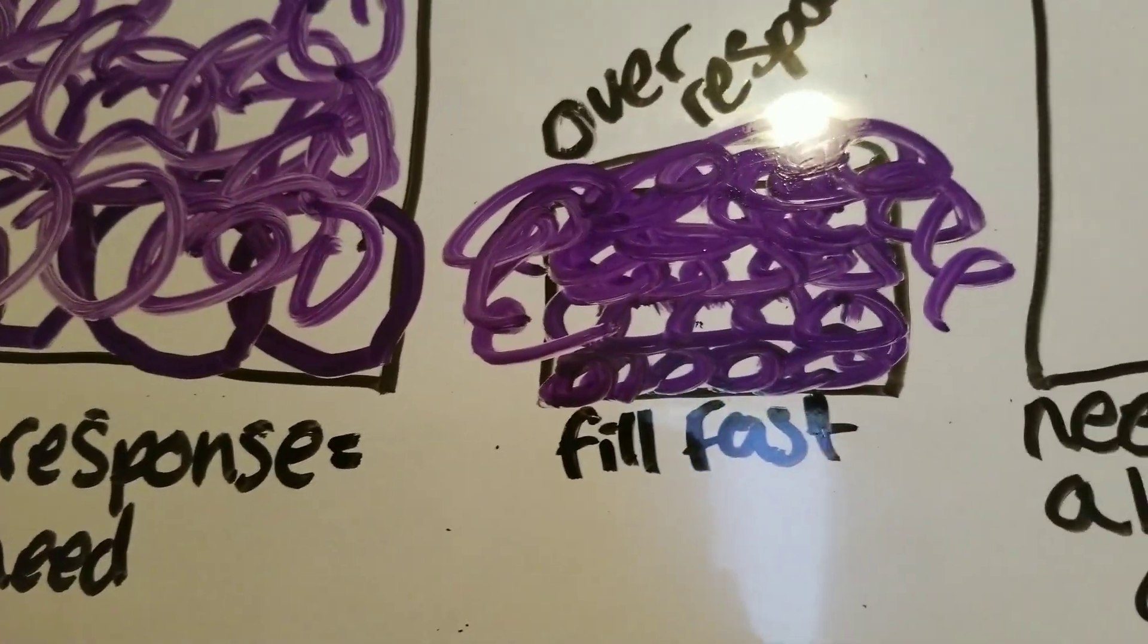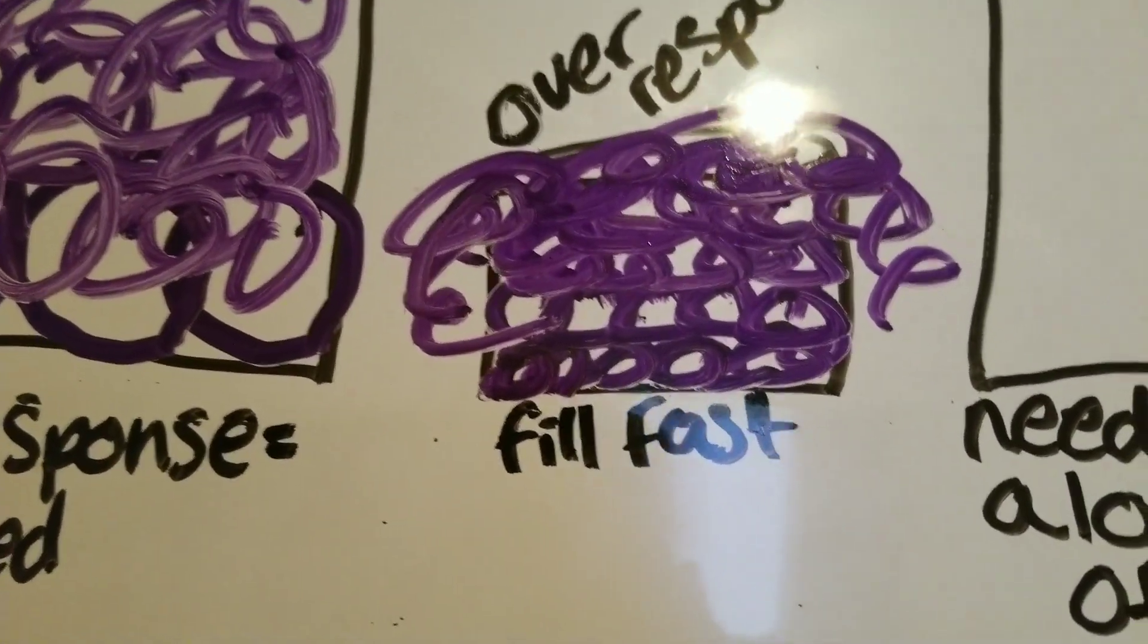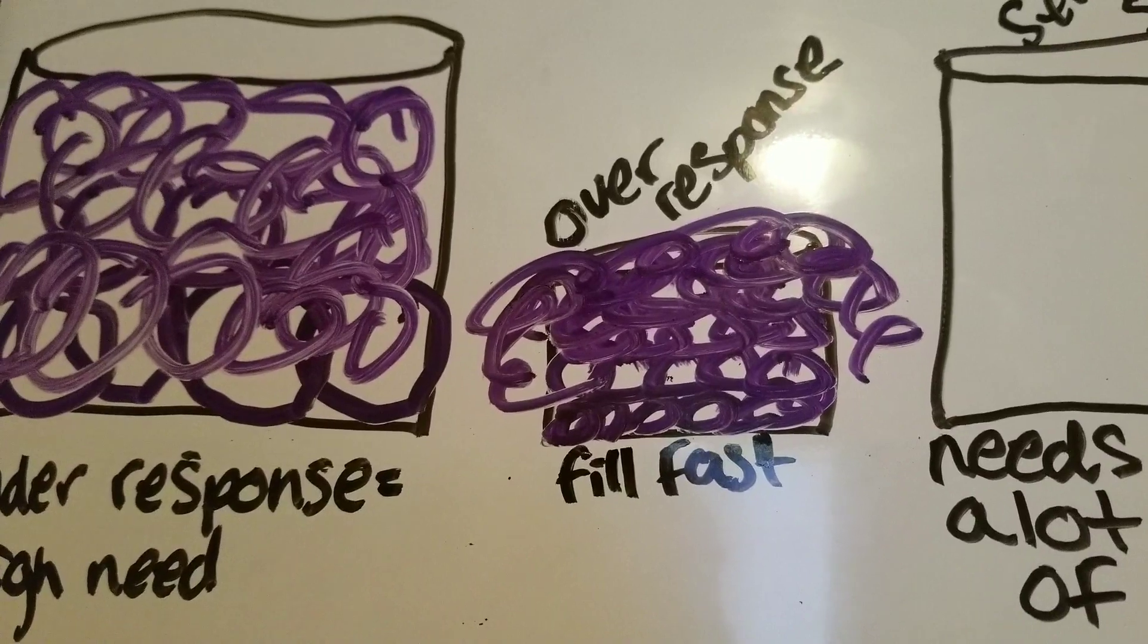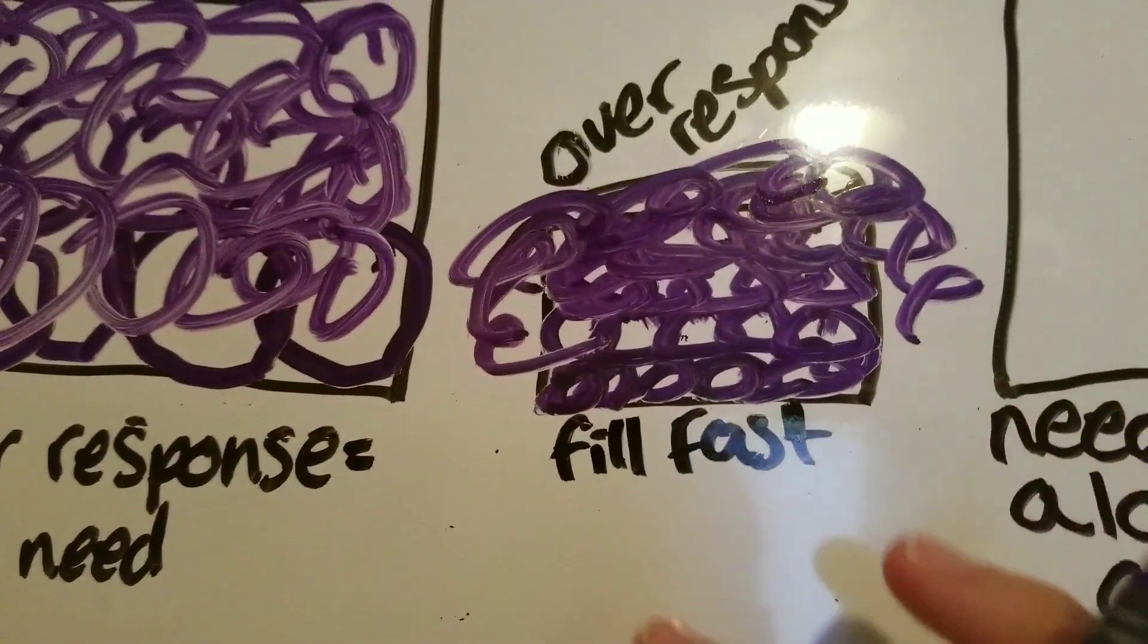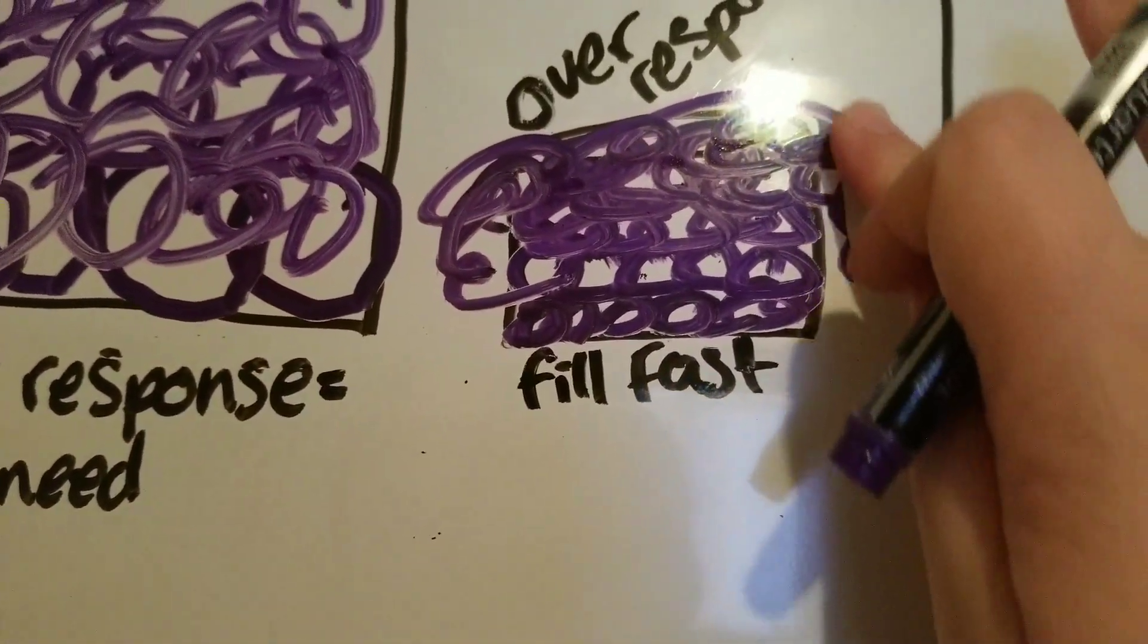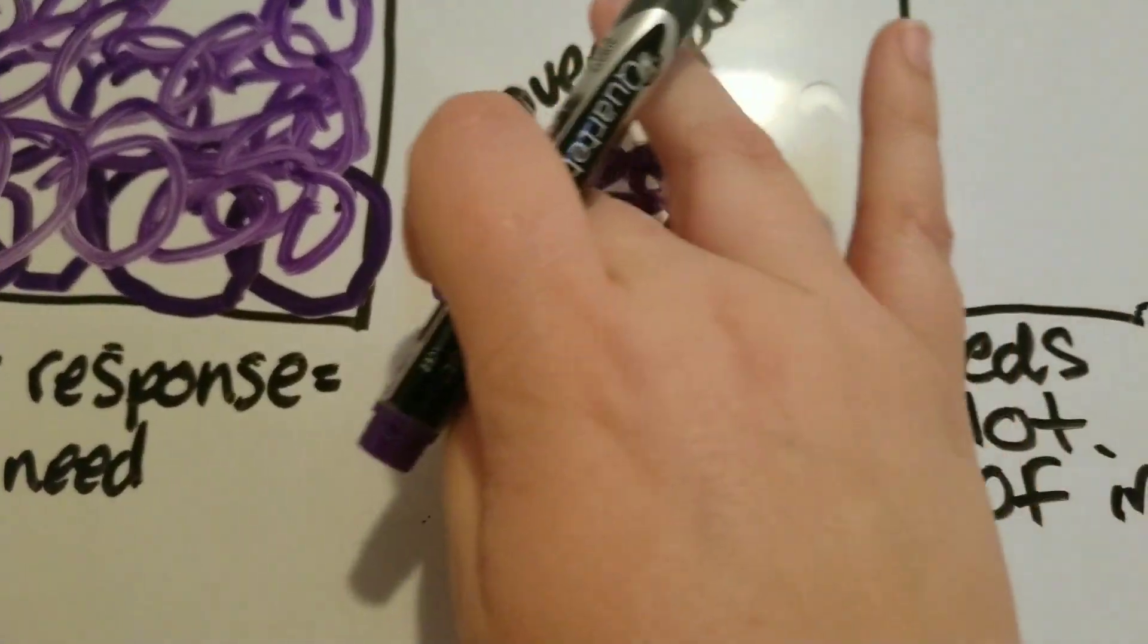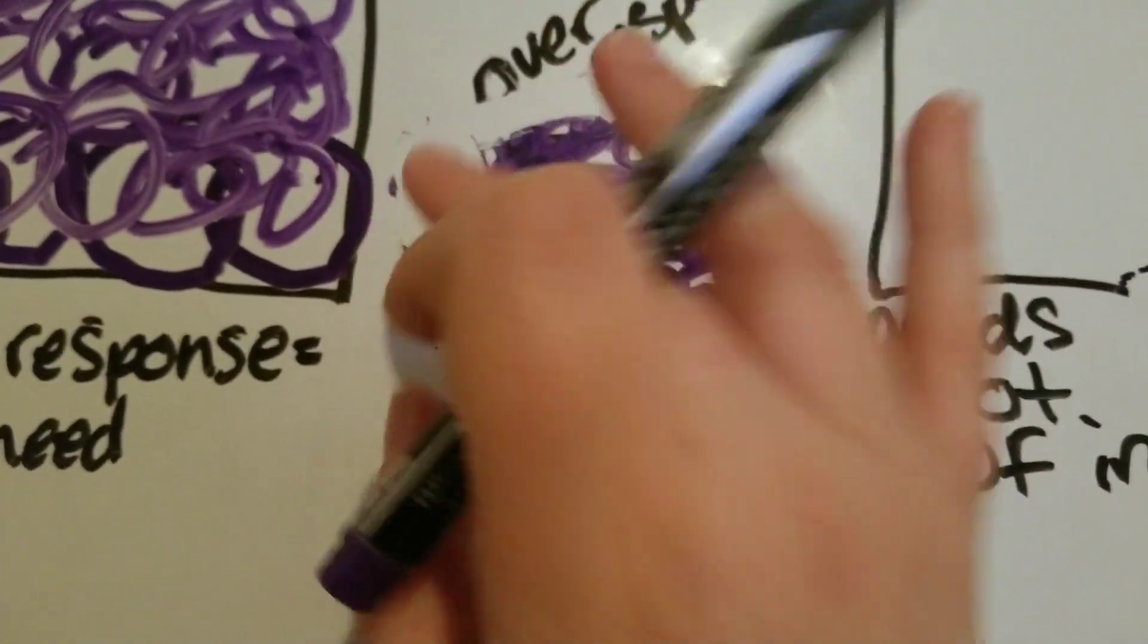My senses are going haywire. So when an individual is over-responsive and their cup fills up fast, what you want to do is you want to eliminate the opportunity for their cup to fill fast.